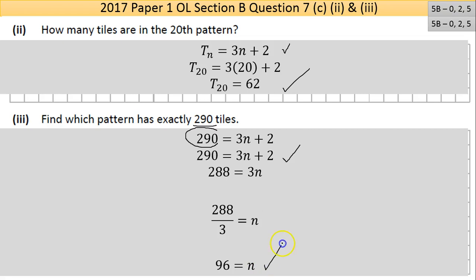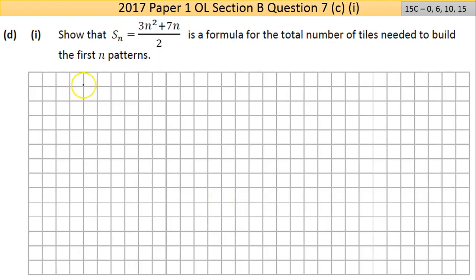Going to Part D part 1 now. Question 7 is always a long question. They're giving us this formula - don't question it, that's just what they give you. I notice here that this n to the power of 2 is a quadratic, so just need to be careful. They show that S_n equals 3n squared plus 7n all divided by 2 is a formula for the total number of tiles needed to build the first n patterns.